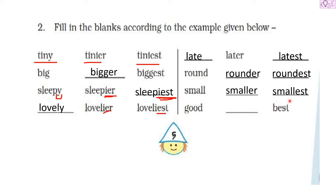'Good' is the positive form. They have already given us the superlative form of 'good,' which is 'best.' The comparative form is 'better.' So these are the adjectives and their comparative and superlative forms.